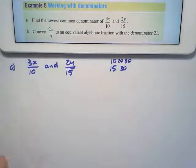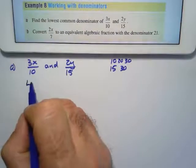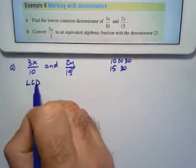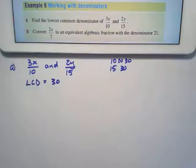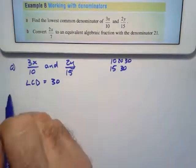So 30 is the lowest common multiple. So lowest common denominator equals 30. That's all we have to do there. For part B,